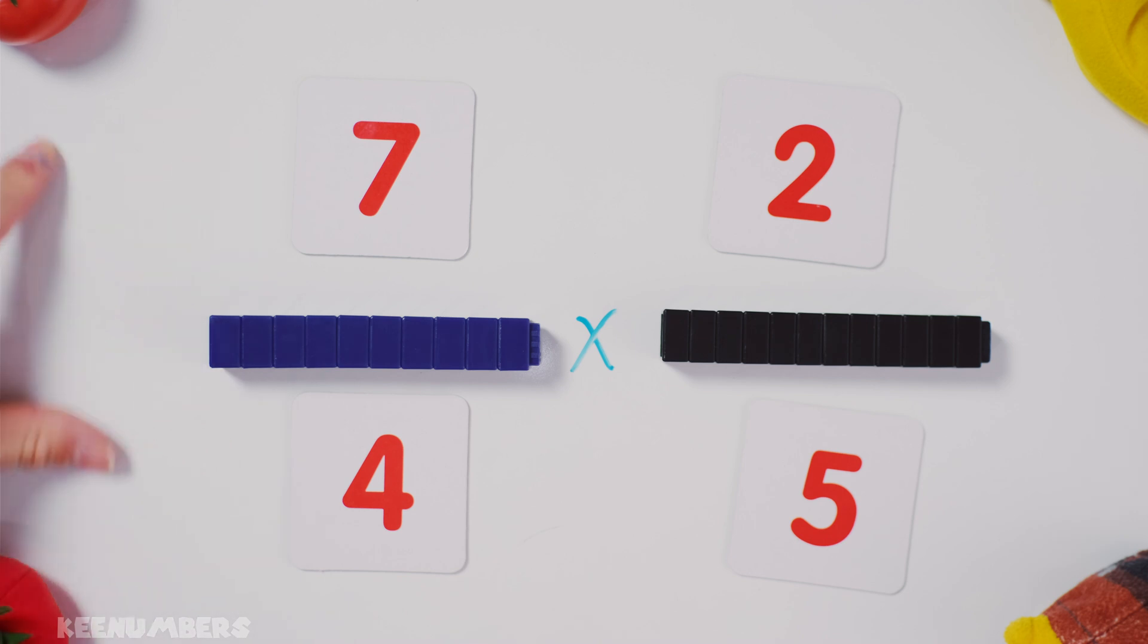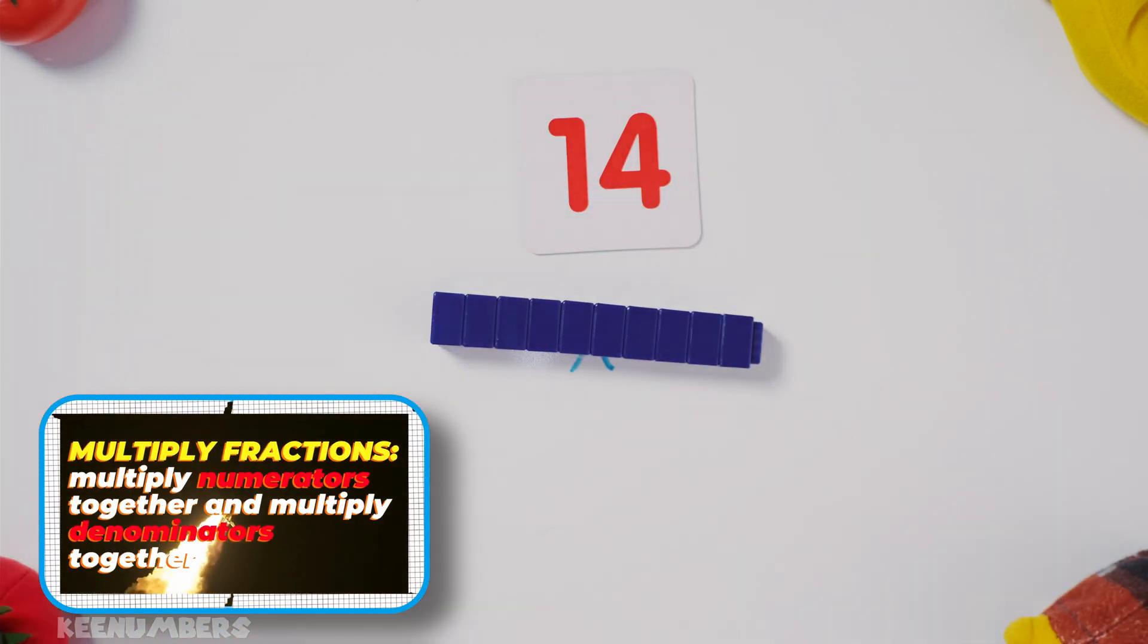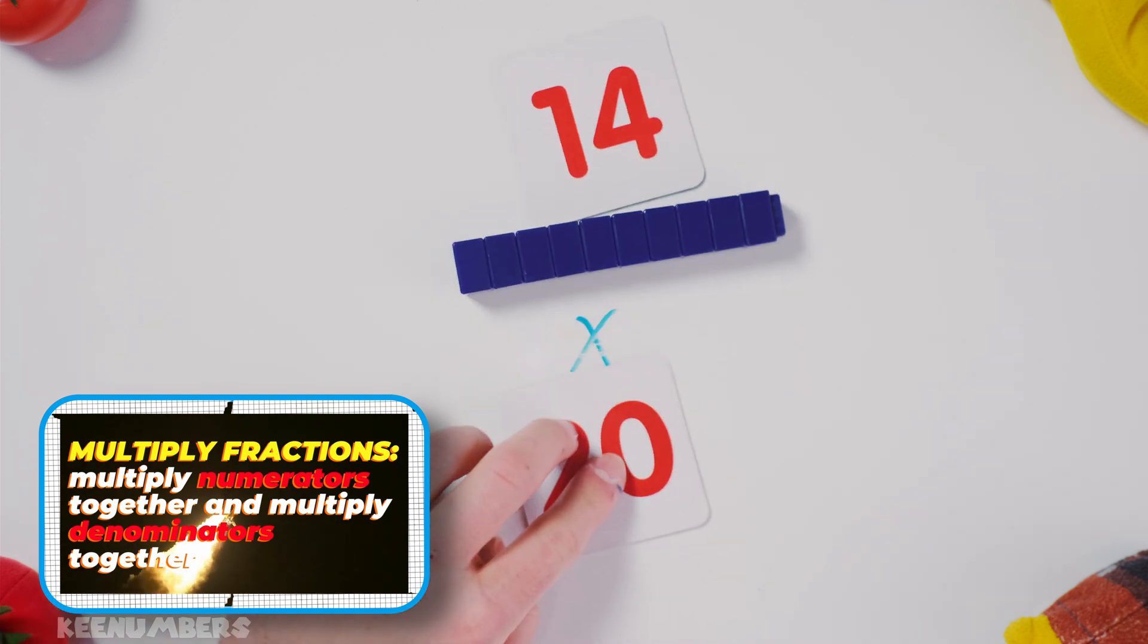Now that we've converted this mixed number into an improper fraction, we can go straight across. Seven by two, that's gonna give us fourteen, and four by five, that's gonna give us twenty.